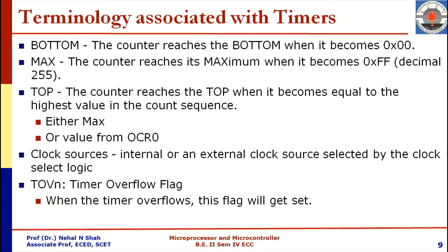Once the counter reaches its maximum value, it rolls over and starts counting from 0x00. With timer counters of AVR ATmega32 microcontroller, various clock sources are associated — clock sources can be internal or external, selected by the clock select logic available in the TCCR register, and there are eight different modes for clock select. Various prescalers are also used. The timer overflow flag is set whenever the timer overflows — that is, when counting upward and reaching 0xFF — after which the timer rolls over.